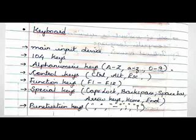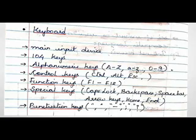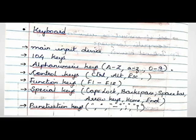Next one is control keys. These are keys which, when pressed with another key, perform a special operation. For example, pressing Control plus C will copy any selected text or object.